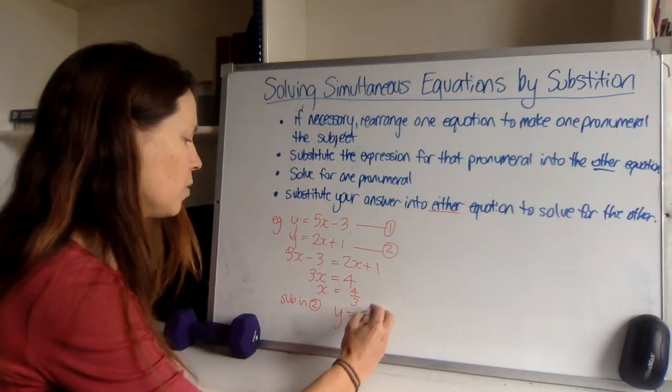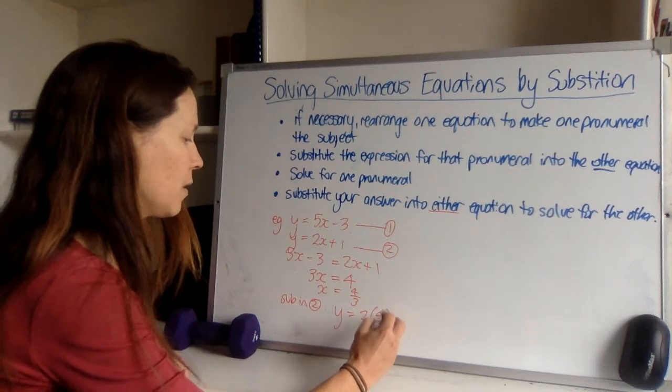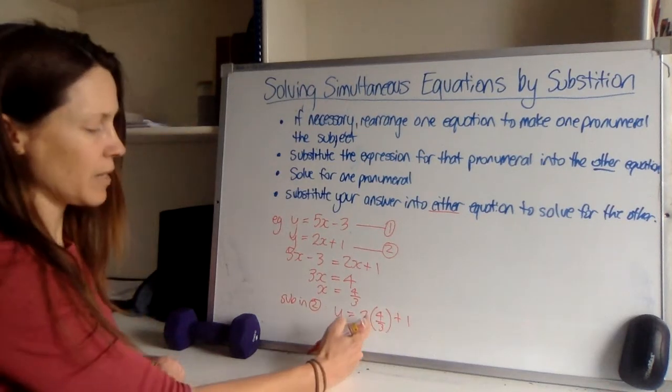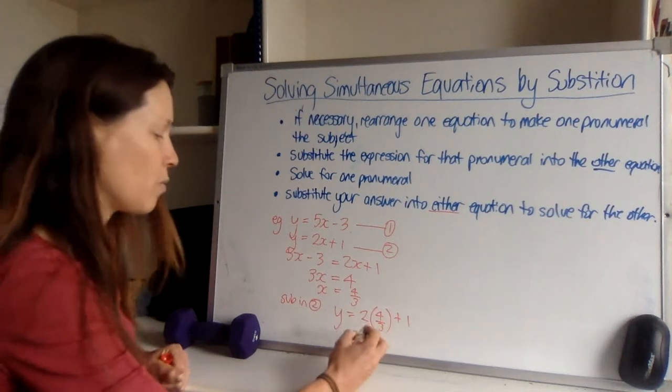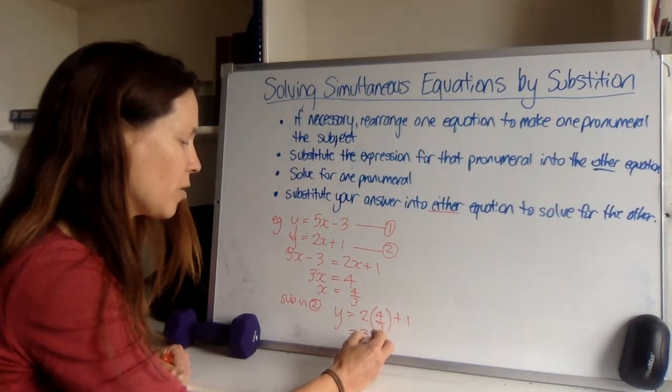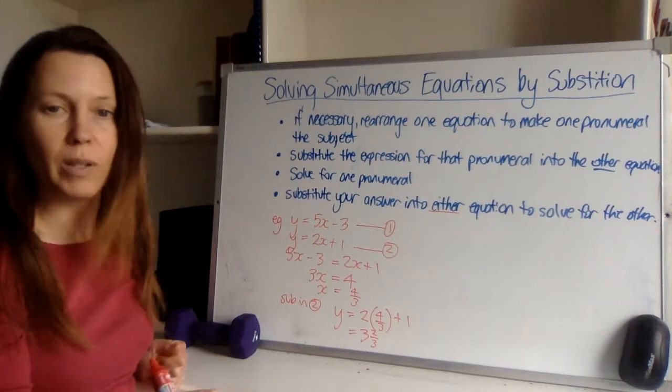So y is equal to 2 lots of 4 thirds plus 1. So that's 8 thirds plus 1, so it won't be 2 and 2 thirds, it will be 3 and 2 thirds, although you can use your calculator for that as well.